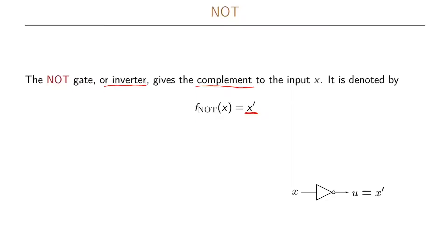Looking at the definition, we have only one input x and then the output will be u. When the input is a zero the output will be a one; when the input is a one the output will be a zero. This is often written using this symbol for our NOT function, so as the input we have x and at the output we have u which equals x prime.